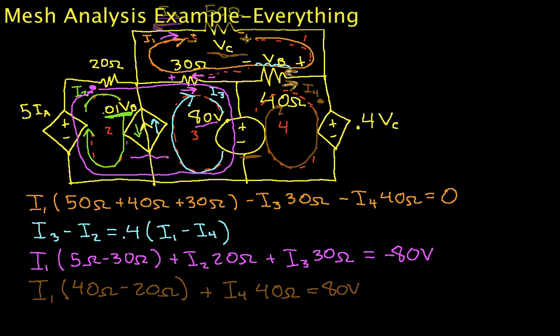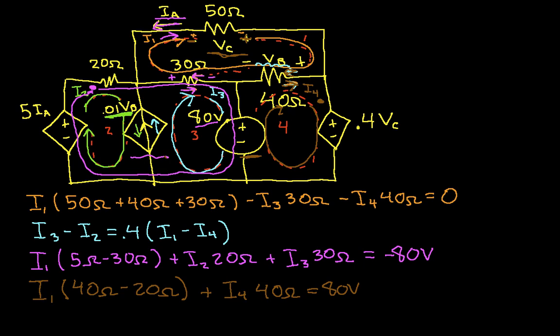Okay, welcome to part two of an example of doing mesh analysis with everything thrown in. Independent sources, dependent sources, both current and voltage sources. As I said in part one, this is the sort of thing that evil professors would put on a test.